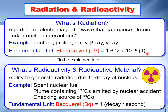On the other hand, radioactivity is the ability to generate radiation due to decay of a nucleus. Examples of radioactive materials include spent nuclear fuel, a plume containing caesium-137 emitted by a nuclear accident, and a check source of cobalt-60. The fundamental unit for expressing radioactivity is becquerel, which is equal to 1 decay per second.